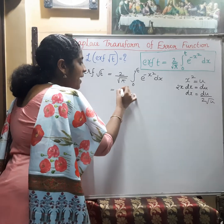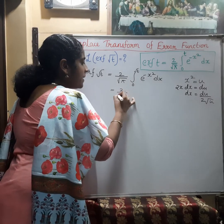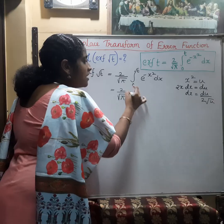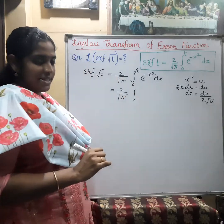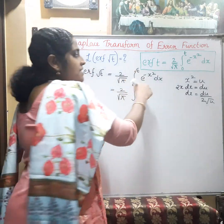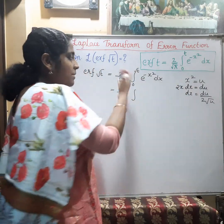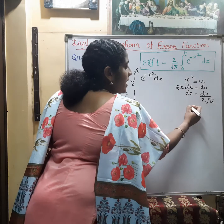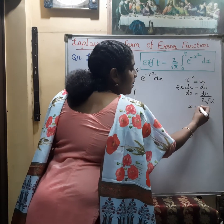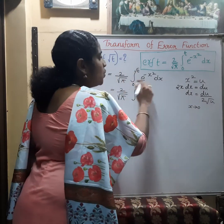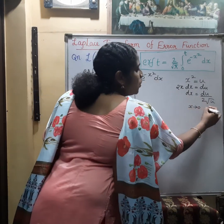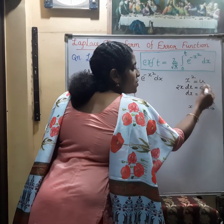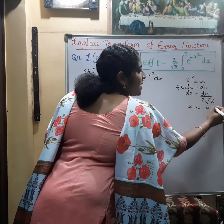On substituting, we get (2/√π) times the integral with limits changed into u terms. When x tends to 0, since u equals x squared, u also tends to 0.